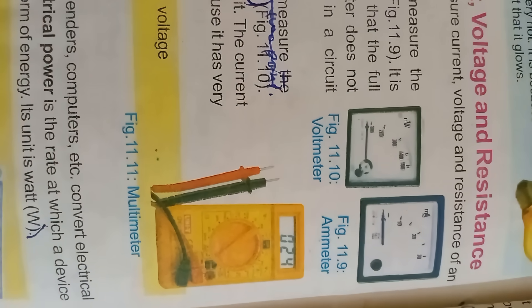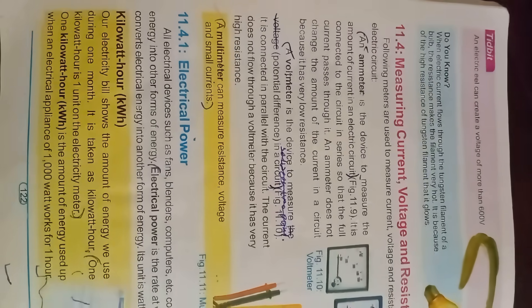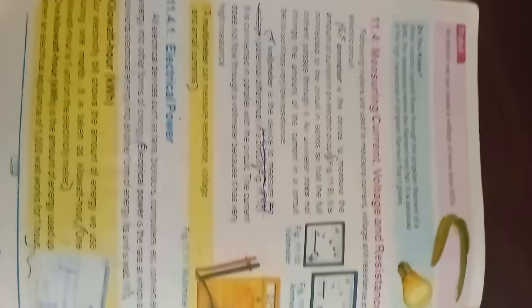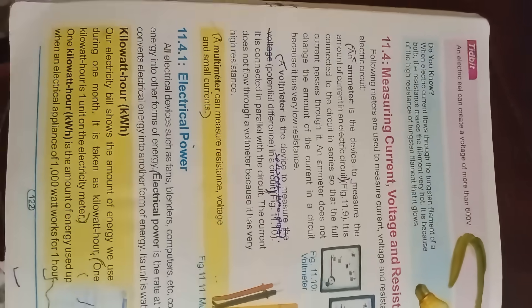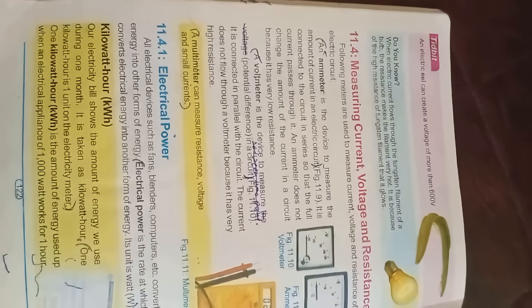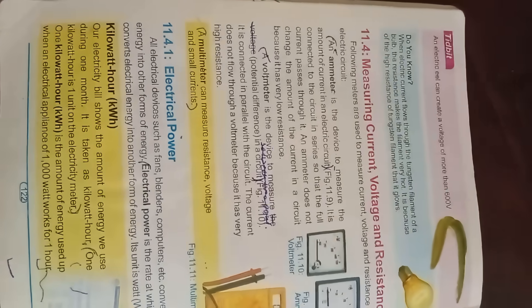Electrical power: all electrical devices such as fans, blenders, and computers convert electrical energy into other forms of energy. Electrical power is the rate at which a device converts electrical energy into another form; its unit is the watt. Our electricity bill shows the amount of energy used in one month, measured in kilowatt-hours. One kilowatt-hour is the energy used when a 1000-watt appliance works for one hour.